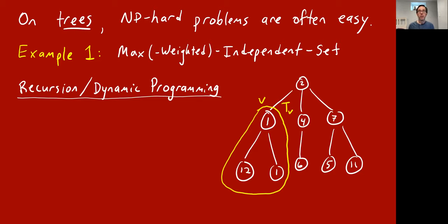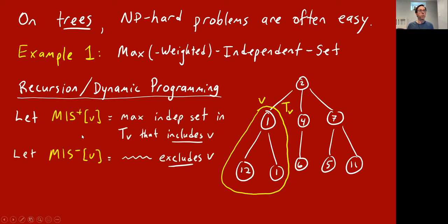I'll use a little notation here. Imagine we're doing this max independent set problem on a tree, and let v be some vertex. I'll write T_v to be the subtree hanging off of this vertex v. We're going to do dynamic programming — make two tables, which I'll call MIS+ and MIS−. MIS+[v] is supposed to be the weight of the maximum independent set just in the subtree rooted at v that includes v.